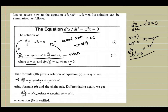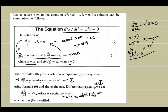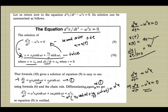We differentiated twice to confirm this is indeed the solution. The second derivative gives d²x/dt² = ω²[x₀ cosh(ωt) + (ν₀/ω) sinh(ωt)] = ω²x. This implies d²x/dt² − ω²x = 0, confirming the solution is correct. The main thing to remember is this formula and its derivation.